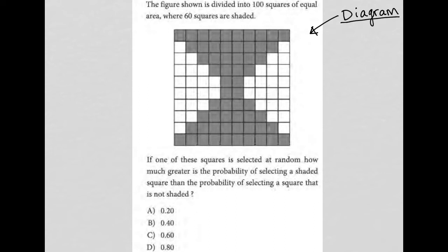So we're looking for probability shaded minus probability not shaded. That's how I read the question.